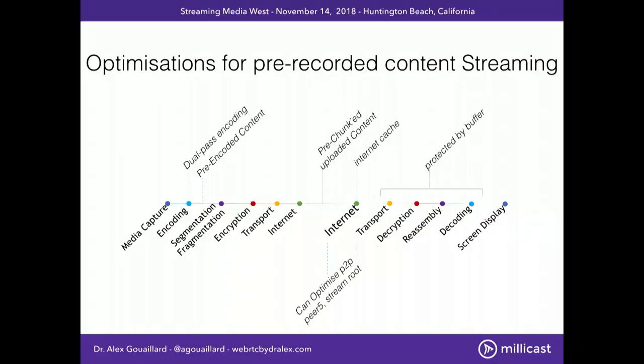People here, when they hear about WebRTC, see the thing right away about Peer5 or Streamroot, which are two companies that use the P2P parts — not the media part — of WebRTC to actually optimize the distribution. So instead of going from the CDN server to the player, each of the viewers watching the same movie at the same time will be able to share some of the chunks together.